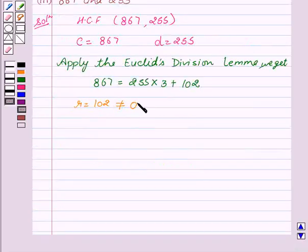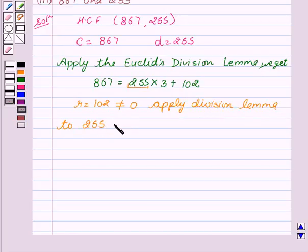This implies that we will apply the division lemma again. Apply division lemma to D, that is 255, and R, which is 102. So this can be written as 255 divided by 102 gives 2 as the quotient and 51 as the remainder. Here we see that R equals 51 is not equal to 0.